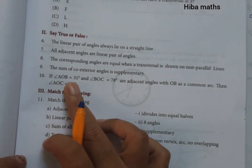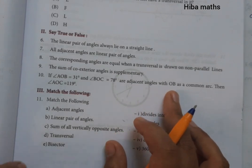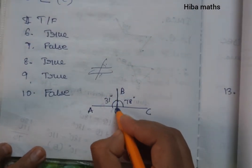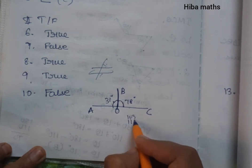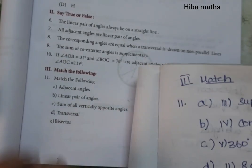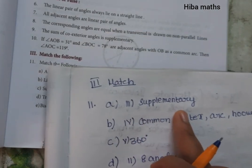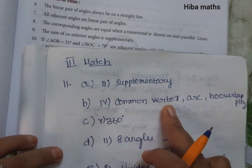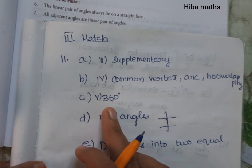For the adjacent angles question: if angle AOB is equal to 31 degrees and angle BOC is equal to 78 degrees, these are adjacent angles. They share a common vertex, a common arc, and are non-overlapping. The sum of all vertically opposite angles is 360 degrees.